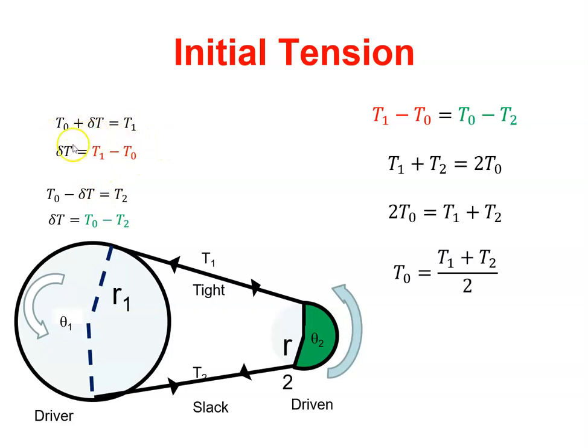Okay, so if I rearrange this then, I get that change in tension is what we start at to what we end up with. And on this side, it should also be equal to what we started with to what we end up with on the slack side. So these two must equal each other, so T1 minus T0 is equal to T0 minus T2. So I want to bring the T0 to one side.